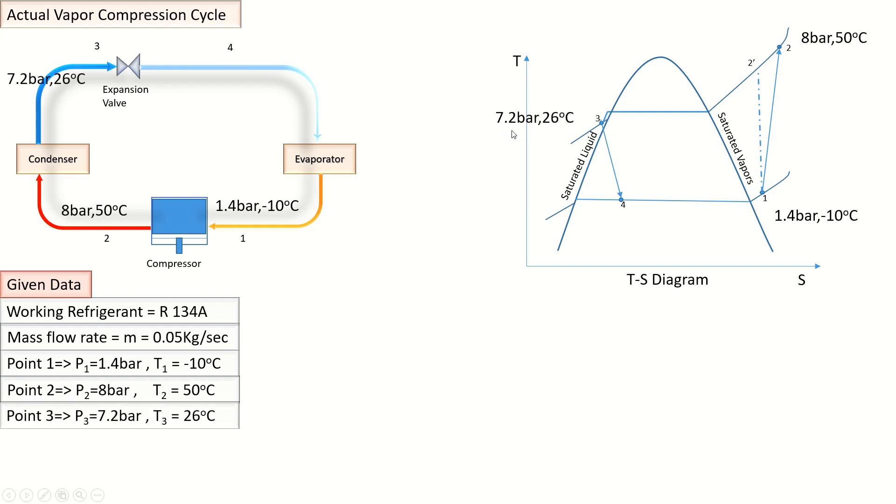At Point 3, pressure is P₃ = 7.2 bar and temperature is T₃ = 26°C because during condensation, due to friction losses in the pipeline, pressure drops down in actual vapor compression cycle. At Point 4, pressure is P₄ = 1.5 bar.